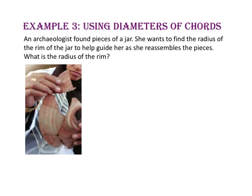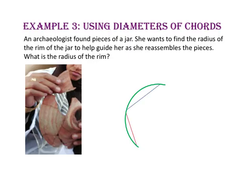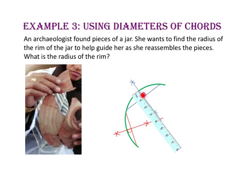In example 3, we will use diameters and chords. An archaeologist found pieces of a jar and wants to find the radius of the rim to help reassemble the pieces. To begin, trace a piece of the rim and draw two chords. Then construct the perpendicular bisectors of each chord: with your compass on each endpoint, draw two small arcs above and below each chord, then draw in the perpendicular bisector using a straight edge. Where the perpendicular bisectors intersect is the center of the circle. Use a ruler to measure from the center to the edge — the radius is 4 centimeters.